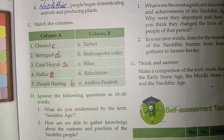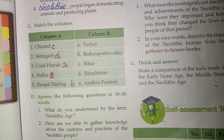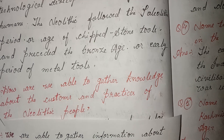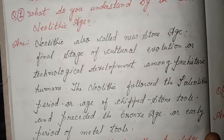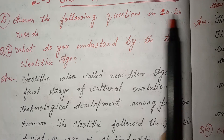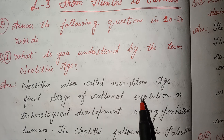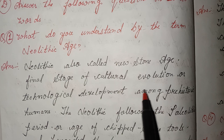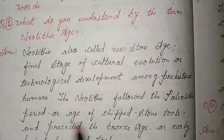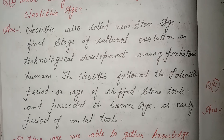I have done the in-book questions. Now for the notebook questions: From Hunters to Farmers. First question: What do you understand by the term Neolithic Age? The Neolithic, also called the New Stone Age, was the final stage of agricultural cultural evolution or technological development among prehistoric humans. The Neolithic followed the Paleolithic period and preceded the Bronze Age, or early period of metal tools.